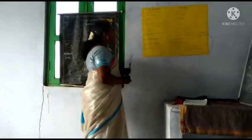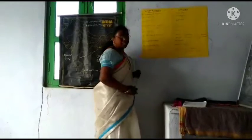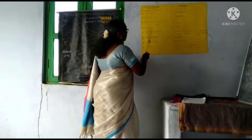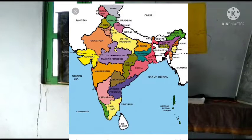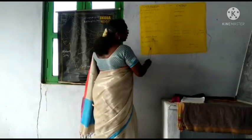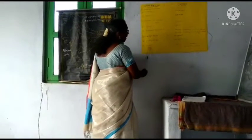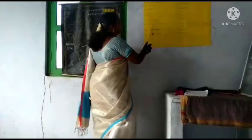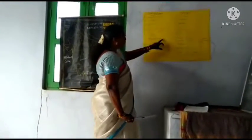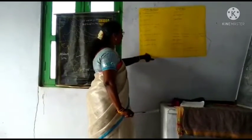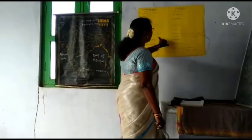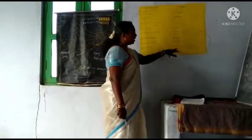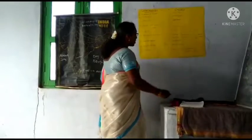Union territories: Andaman and Nicobar — Port Blair, Chandigarh — Chandigarh, Daman and Diu — Daman, Dadra and Nagar Haveli — Daman, Delhi — Delhi, Jammu and Kashmir — Srinagar in summer and Jammu in winter, Lakshadweep — Kavaratti, Puducherry — Puducherry, Ladakh — Leh. Jammu and Kashmir was divided into two union territories — Jammu and Kashmir, and Ladakh — both formed on 31st October 2019.